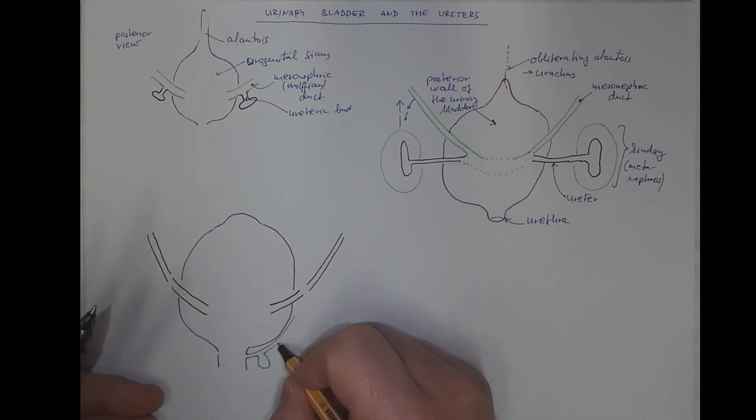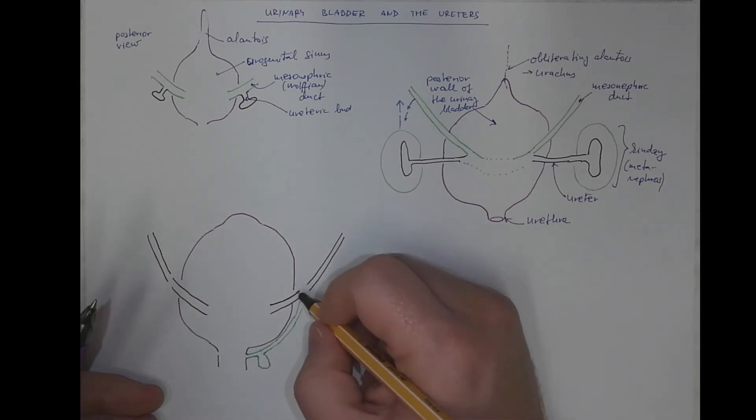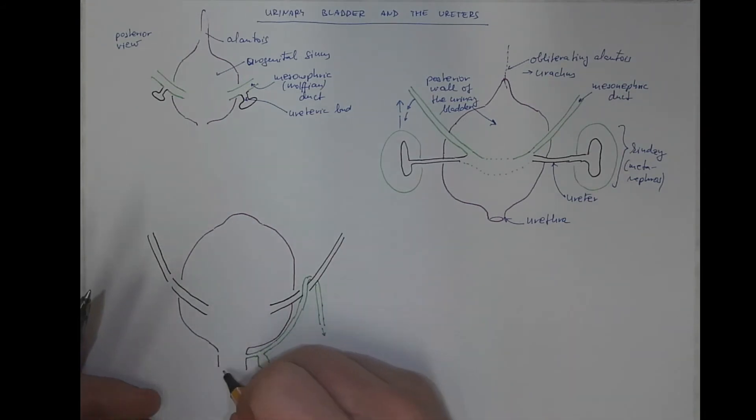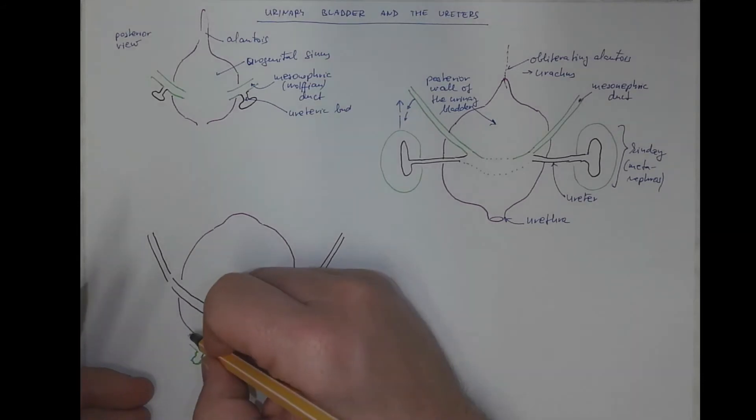Because here it will differentiate into the seminal vesicles and then it goes upwards and then the ductus deferens comes into the inguinal canal and also on the other side the seminal vesicles as accessory glands.